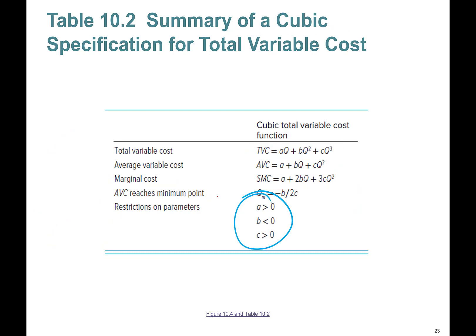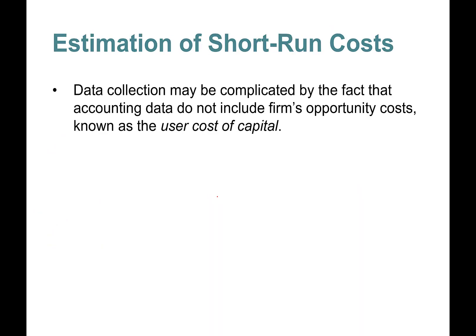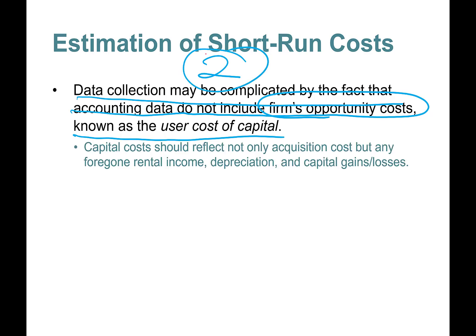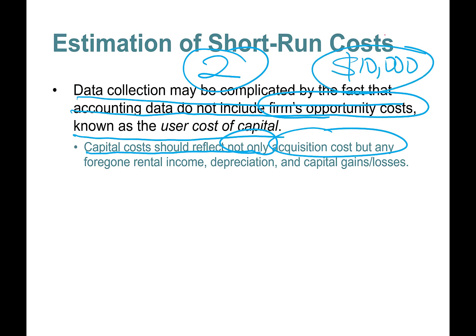Now, estimation of short-run costs. Data collection can be complicated by the fact that accounting data do not include the firm's opportunity cost, sometimes called the user cost of capital. Capital costs should reflect not only the acquisition cost — say, ten thousand dollars for a computer and server — but also foregone rental income, depreciation, and capital gains and losses.